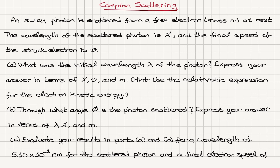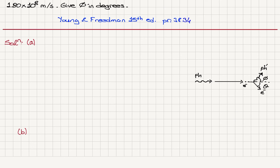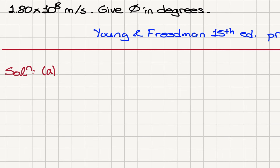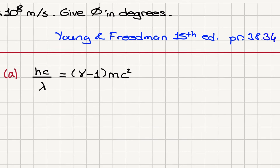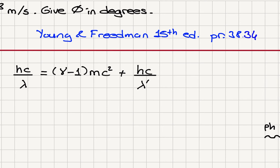The incoming photon has an energy hc over lambda, and the electron will gain a kinetic energy of gamma minus one times mc squared, and the scattered photon will have an energy hc over lambda prime. So we have the energy conservation equation, and from this equation we can solve for lambda.